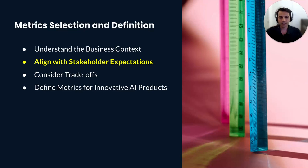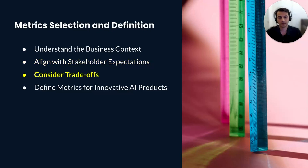We should also ensure that chosen metrics align with stakeholders' expectations. In a customer-facing AI product, for example, user experience metrics like speed and accuracy might be key. In many cases, improving one metric can lead to a decline in another — like precision versus recall. Understanding these trade-offs is critical in choosing which metrics to prioritize.